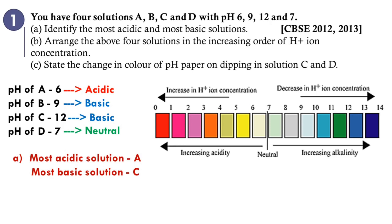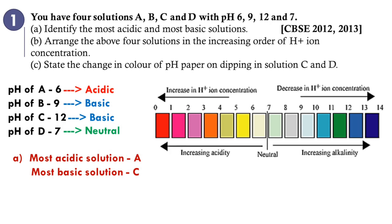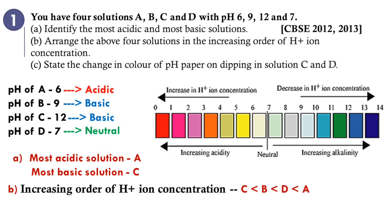For increasing order of H⁺ ion concentration: basic solutions have less hydrogen ion concentration. Among B and C, C is more basic so it has the least H⁺ concentration. Among the remaining, D is neutral and A is acidic, so D has fewer hydrogen ions than A. Therefore, the increasing order of H⁺ ion concentration is: C, B, D, A.